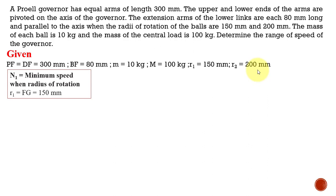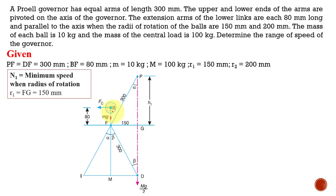The first configuration corresponds to the minimum speed. We have taken N1 as minimum speed and the corresponding radius of rotation is 150 mm. The upper arm length is 300 mm and the lower arm length is also 300 mm — both equal in magnitude. The vertical link length is 80 mm. The mass of the ball is 10 kg and the sleeve mass is 100 kg. Since we have considered the half cross-section of the governor, we use Mg divided by 2. H1 is the distance from point P to point F.